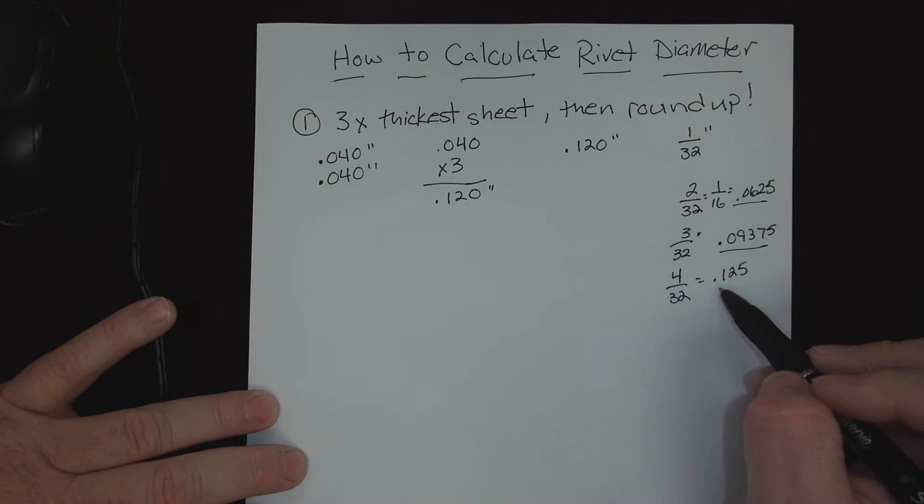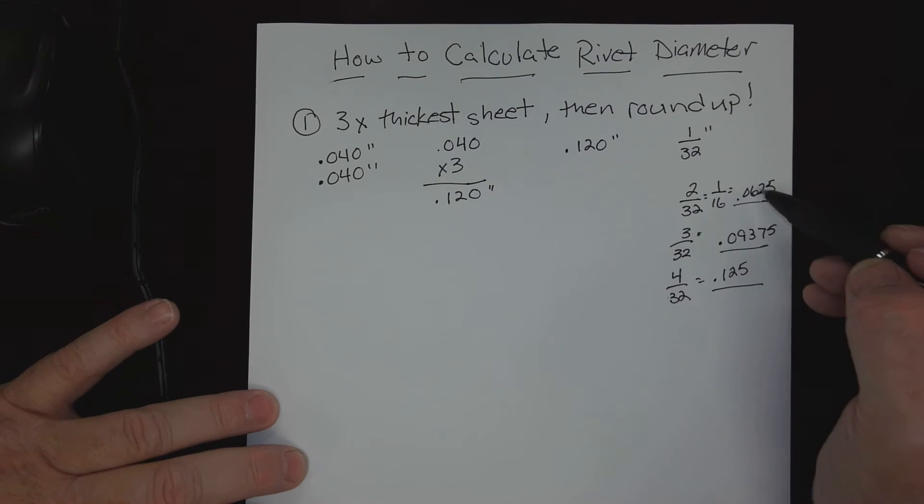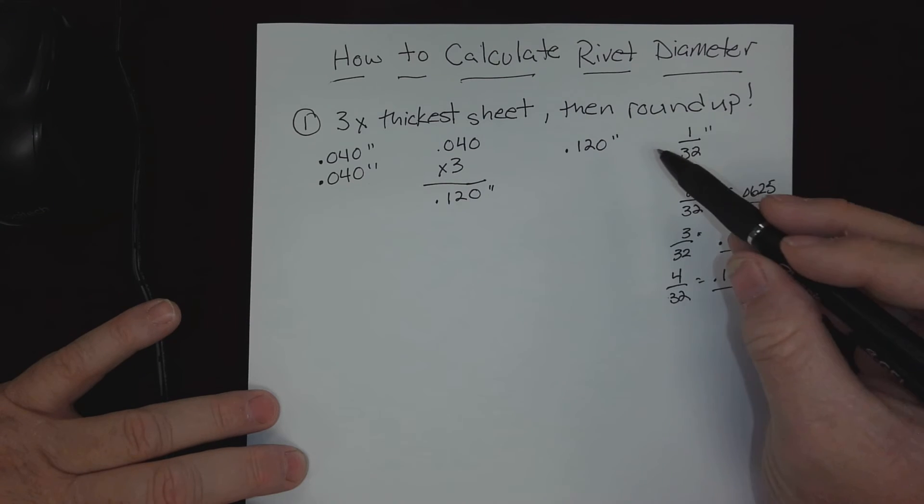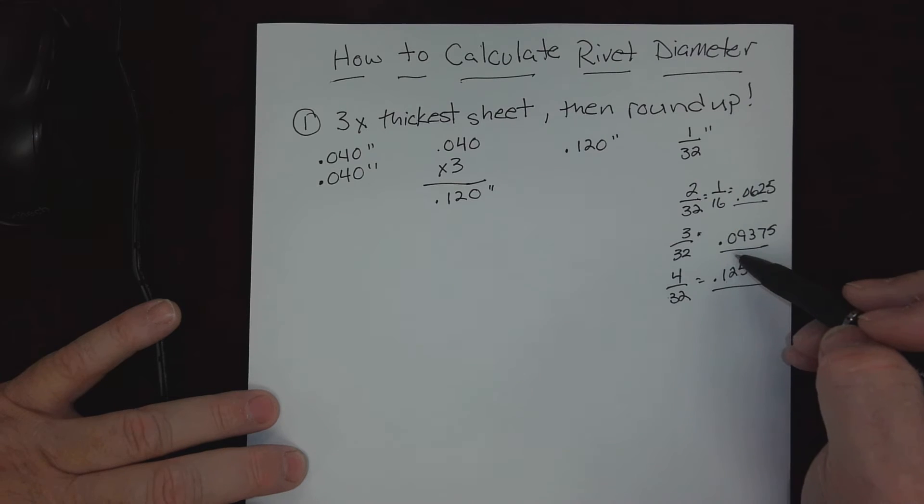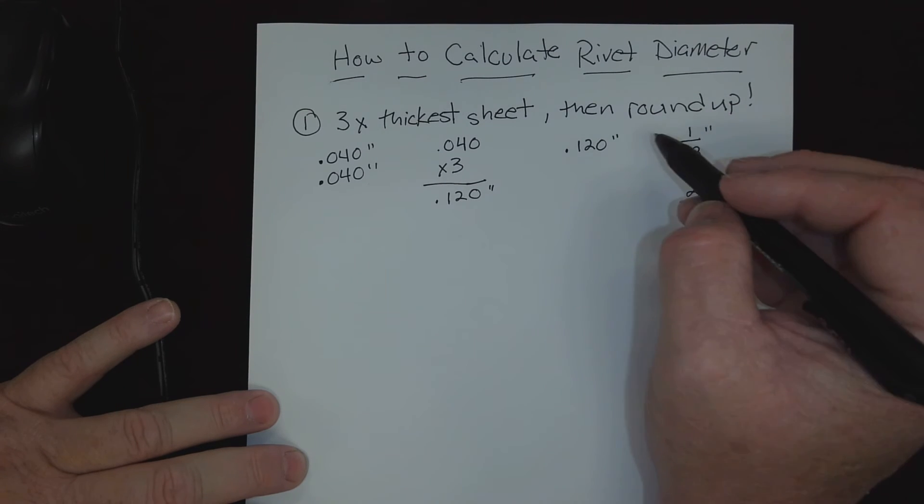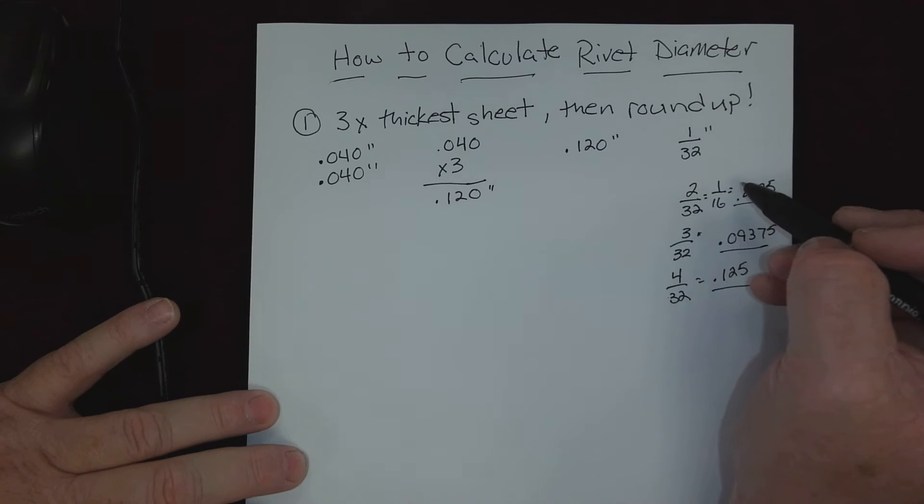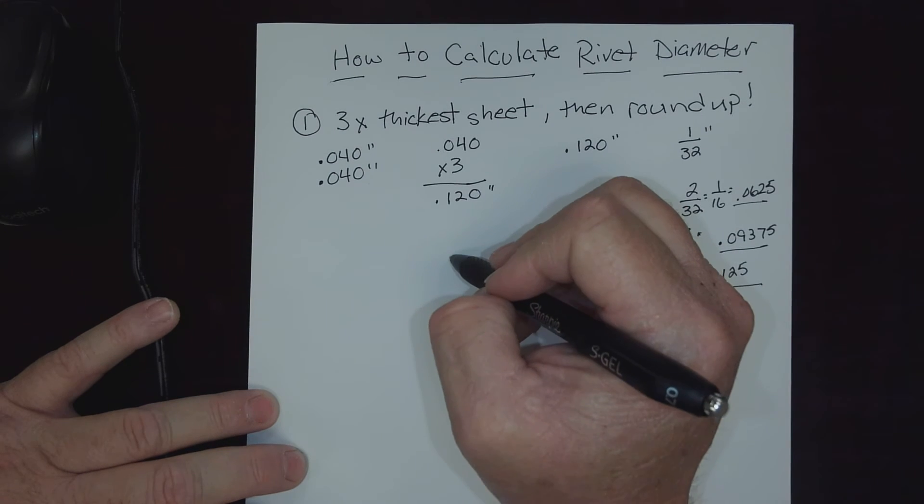So far out of these selections, one hundred and twenty-five thousandths is closest to one-twenty, and it would actually round up to get there. So if we went to one-twenty, we would land on that, look at our rivet sizes, and go one size up. So our proper rivet diameter...